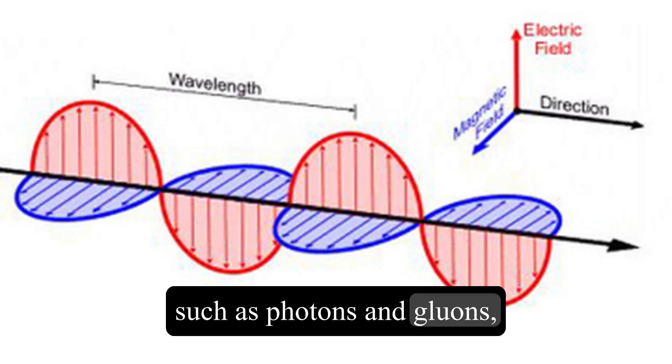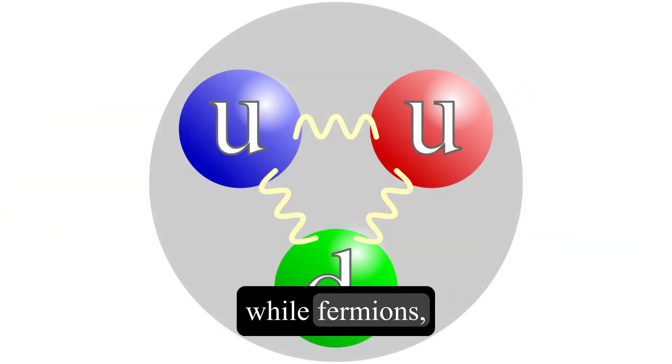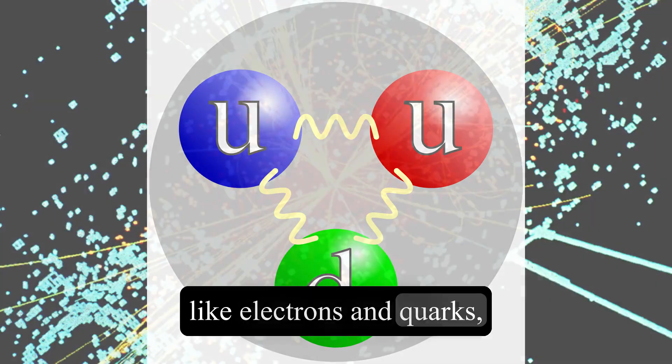Bosons, such as photons and gluons, are force carriers, while fermions, like electrons and quarks, make up matter.